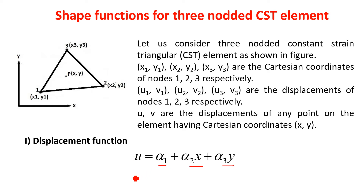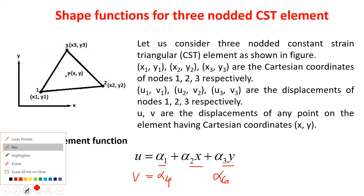To write down the displacement function for Y direction, V, the elements from the Pascal triangle remain the same; only the generalized coordinates change to alpha4 through alpha6. In derivation of shape functions, the number of shape functions for the CST element are three: N1, N2, N3. These three shape functions are used to represent both displacement U and displacement V. Therefore, there is no need to consider displacement in Y direction while deriving shape functions — only displacement in X direction is sufficient.